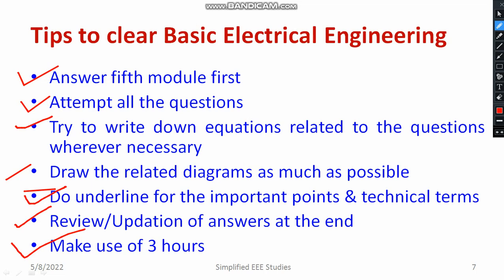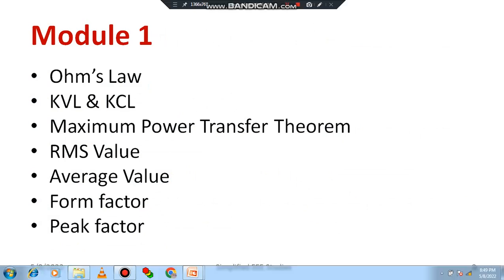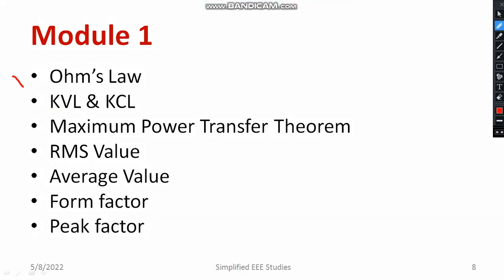These are the basic observations for basic electrical engineering — and not only for this subject but for all exams. In module 1, don't leave the following topics: Ohm's law is a must, KVL and KCL, and maximum power transfer theorem. If you face difficulty with the derivation, at least study the statement and theory part. You need to know the definition and derivation of RMS value and average value, from which you can calculate the form factor (RMS to average) and peak factor (maximum to RMS).